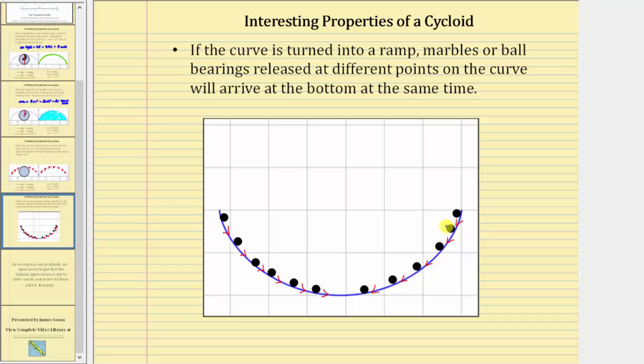So if these were all ball bearings on the curve, and we release them at the same time, they would all arrive at the bottom at exactly the same time.